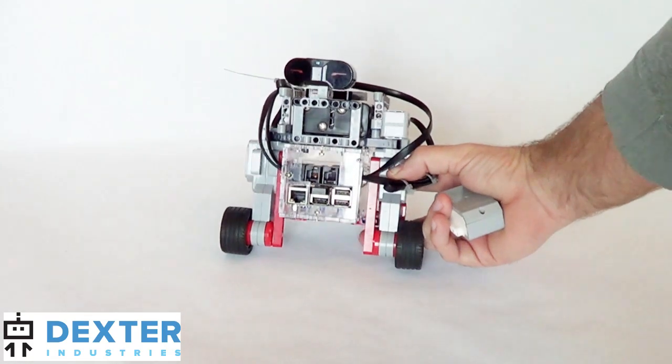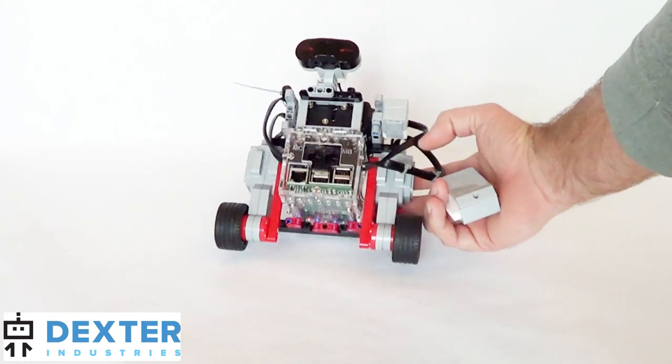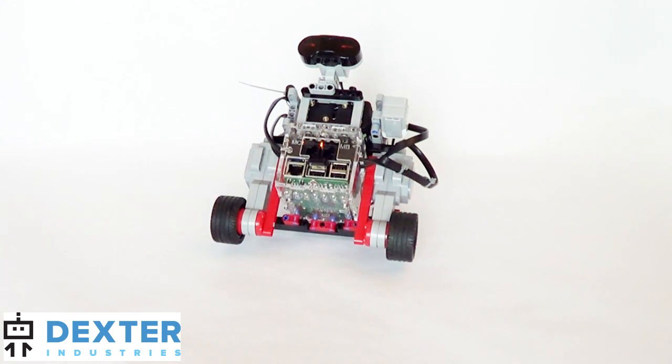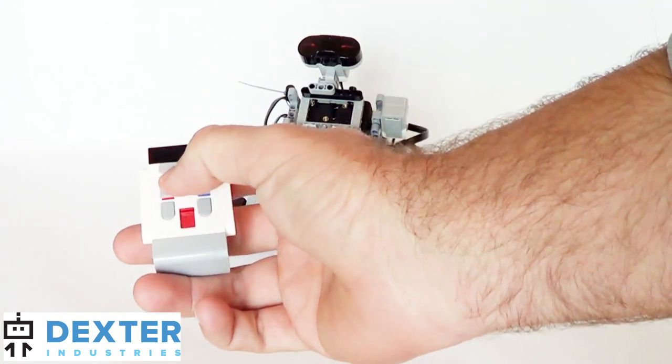We'll set up the BalanceBot. Set it down, start the Python program. It's laying on its back. On the IR transceiver, press the red up button.